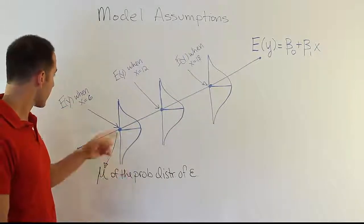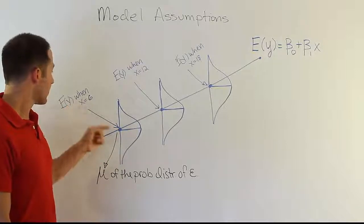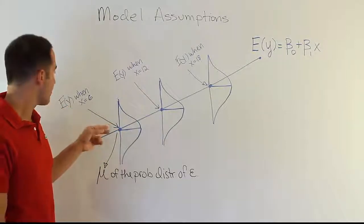So if you use 6 in the model you're going to get that result from the equation. And that's your expected value of y when x is actually 6.